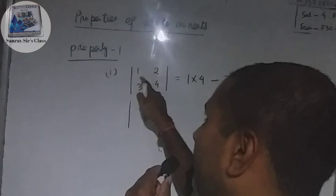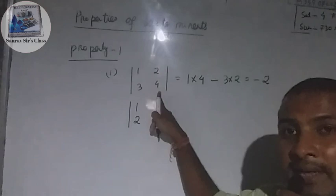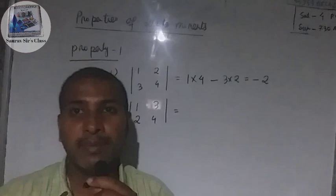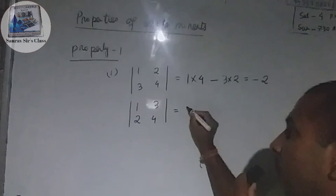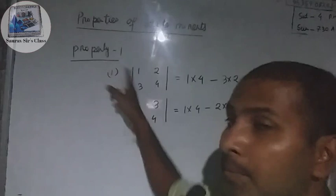Now interchanging rows and columns: the first row becomes the first column, and the second row becomes the second column, giving [1, 3; 2, 4]. Computing: 1 into 4 minus 2 into 3 = 4 minus 6 = minus 2. So the first property holds — after interchange the determinant value remains the same.